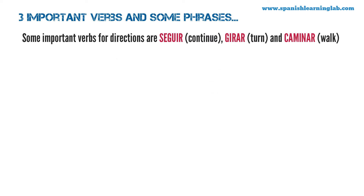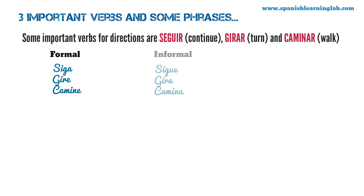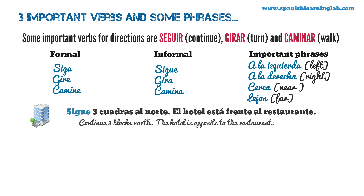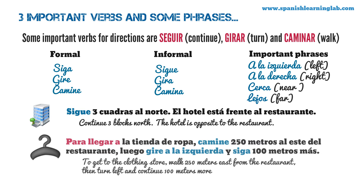Three important verbs and some phrases in Spanish. Some important verbs for directions are seguir — to go on, girar — to turn, and caminar — to walk. If you want to be formal, use: siga, gire, and camine. If you want to sound casual, use: sigue, gira, camina. With the verb girar you will also need the expressions a la izquierda — to the left, and a la derecha — to the right. For example: Sigue 3 cuadras al norte. El hotel está frente al restaurante. Para llegar a la tienda de ropa, camine 250 metros al este del restaurante, luego gire a la izquierda, y siga 100 metros más. The phrase para llegar a means to get to in Spanish. You can also use the words cerca and lejos to talk about the distance between places.